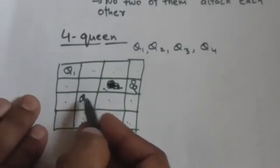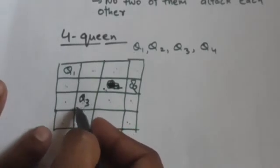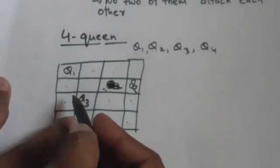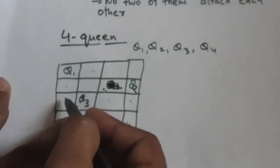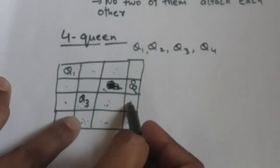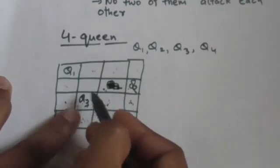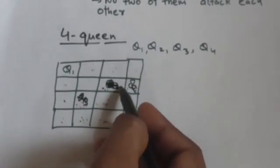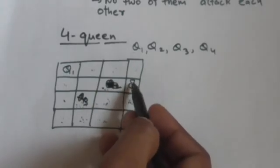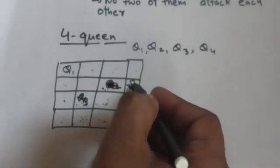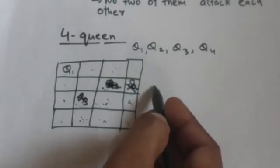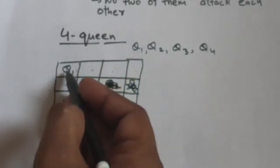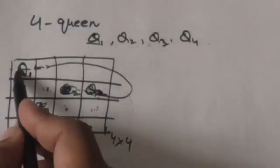We backtrack to the earlier state and try a different option for queen Q3. But Q3 has no other valid option — placing it in the first square gets attacked by Q1, and placing it in the other squares gets attacked by Q2. So we backtrack again and try a different option for Q2, but Q2 also has no other option. We backtrack further and try a different option for queen Q1.